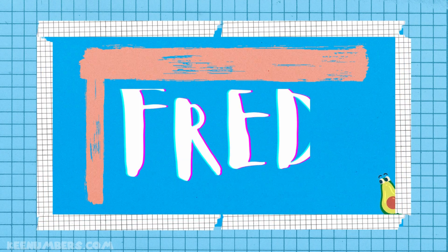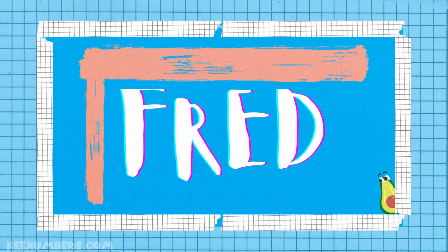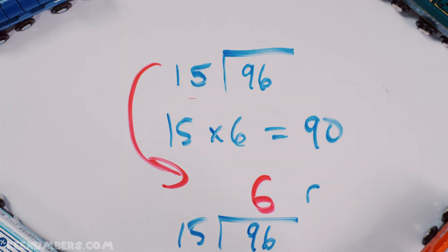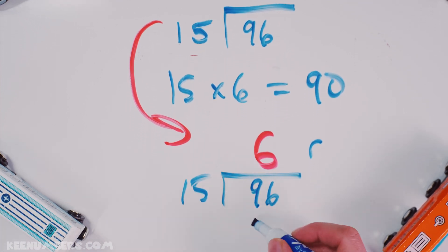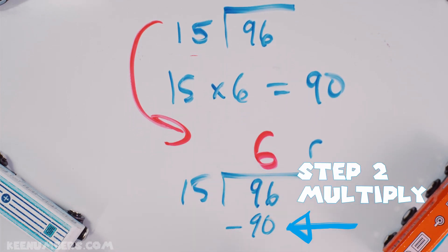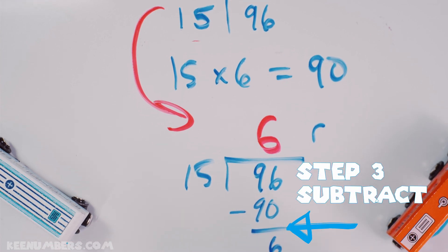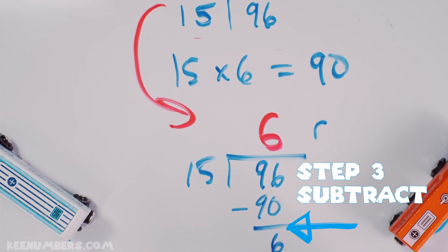also known as Fred. And you'll have a remainder of, let's see, what is our remainder? 6 by 15, 90. We're gonna subtract, that's step 2. What's left over? 6. We have a remainder of 6.